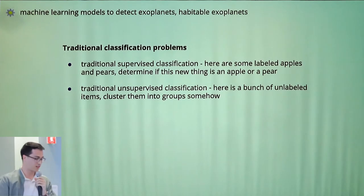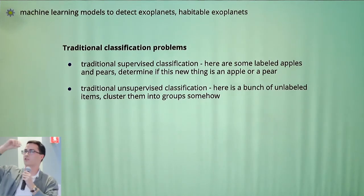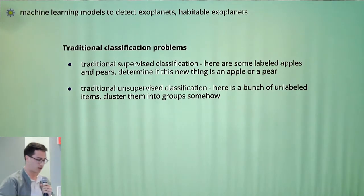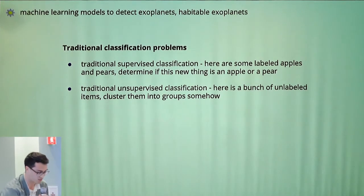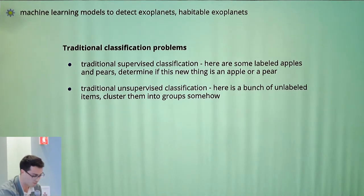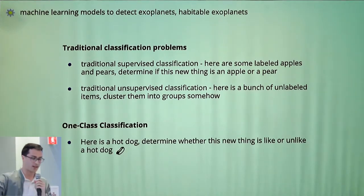In traditional classification problems, you'll see that like supervised classification, you're given apples and pears, determine if the new thing is an apple or a pear. Unsupervised, here's some data, cluster it somehow.